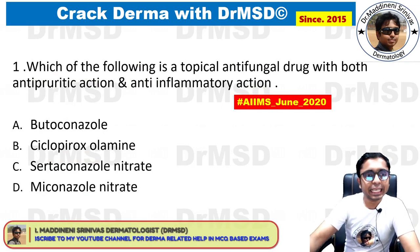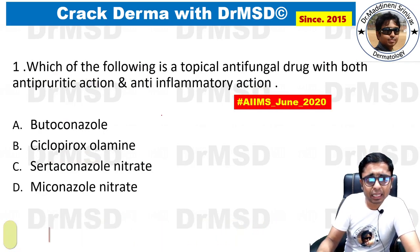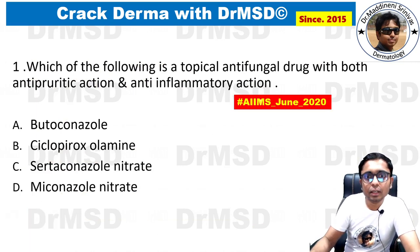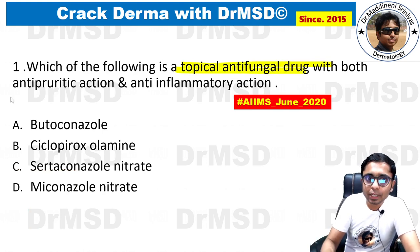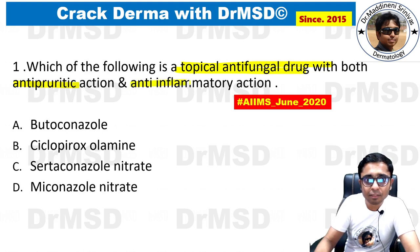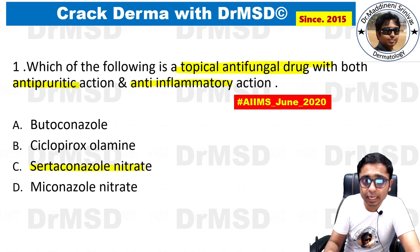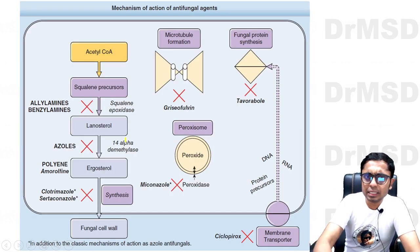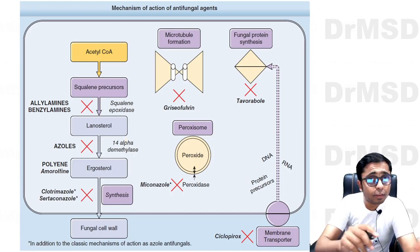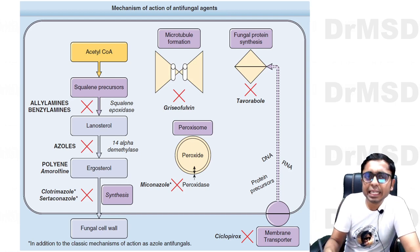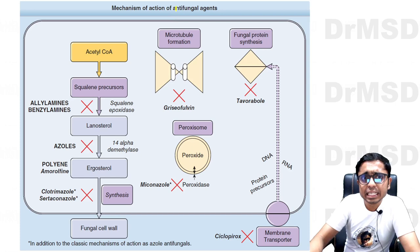The first question asks: which of the following is a topical antifungal drug with both antipruritic as well as anti-inflammatory action? The answer is option C, sertaconazole. This is essentially a dermatopharmacology MCQ — an integration between dermatology and pharmacology.